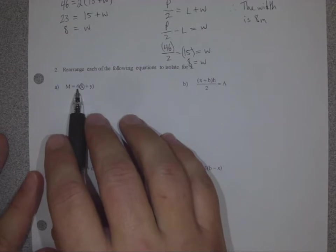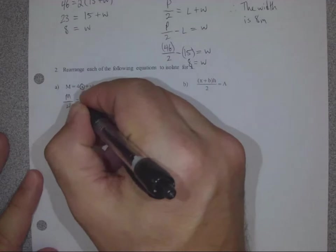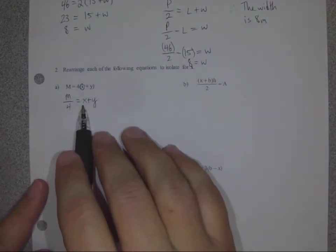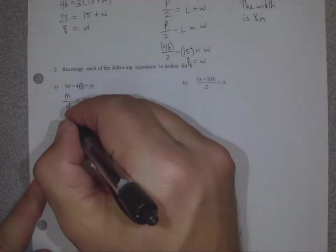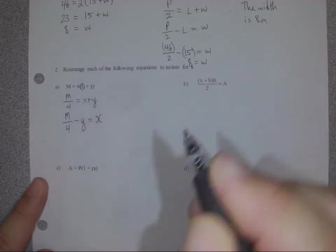I notice that x is in brackets again. And it's being multiplied by 4. So we need to get rid of that 4 first. M divided by 4 equals x plus y. Now I need to get x by itself by subtracting y. So m divided by 4 minus y is equal to x.